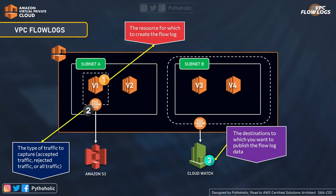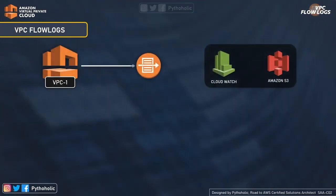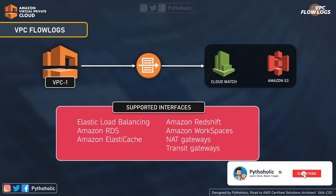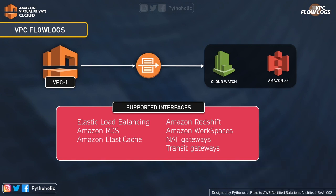Looking at the visual, Subnet A has VPC flow logs enabled for a specific instance or network interface, so it publishes logs only for that. On the right-hand side, VPC flow logs have been enabled for the whole subnet, which covers all instances V3 and V4 and the network interfaces that are part of the subnet. However, since nothing is attached to instance V2, it misses out on the logs. You can also create flow logs for interfaces created with Elastic Load Balancing, Amazon RDS, Amazon ElastiCache, Amazon Redshift, Amazon WorkSpaces, NAT Gateways, and Transit Gateways — giving many provisions to enable VPC flow logs and monitor these systems.